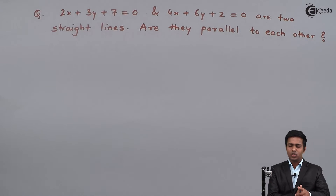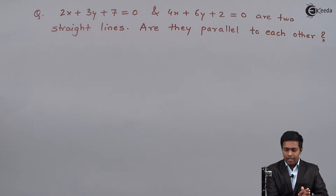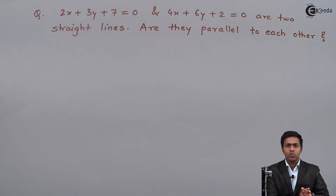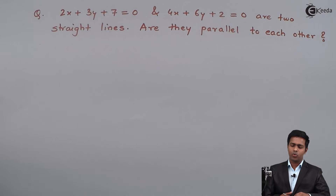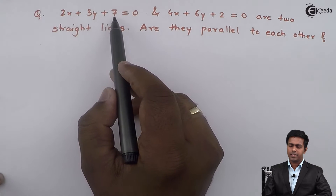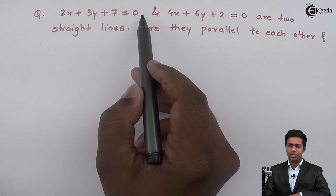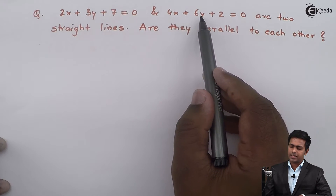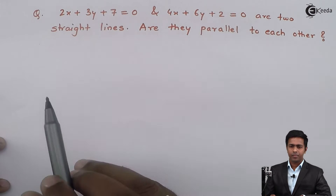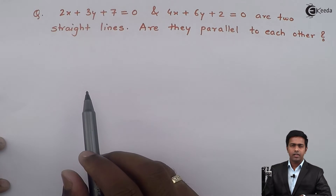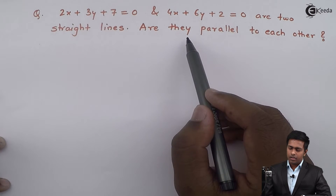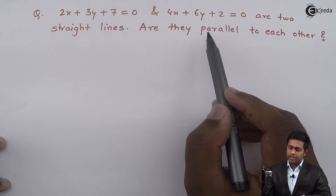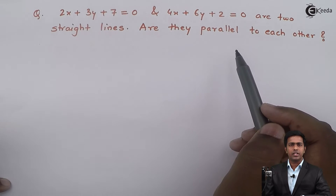Hello friends. Here in this problem there are two straight lines given. The first straight line is 2x plus 3y plus 7 equal to 0, and the second straight line is 4x plus 6y plus 2 equal to 0. The question is: are these two lines parallel to each other?